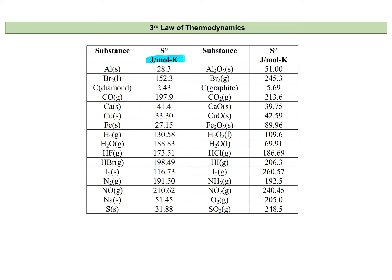Let's compare water at different phases. Liquid water has a standard entropy of 69 J/mol·K while water vapor has 188 J/mol·K — more than twice, nearly three times as much entropy in the gas phase. That makes sense because gas-phase particles have more freedom of motion, can occupy many more arrangements in space, and therefore have more microstates.